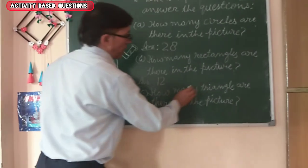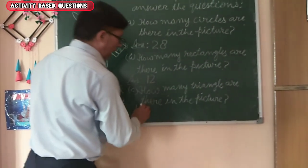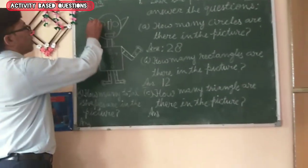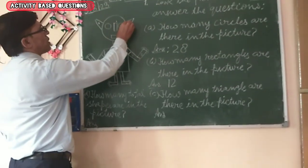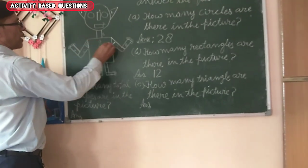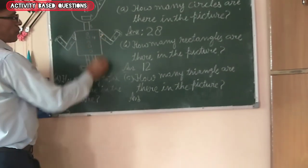How many triangles are there in the picture? 1, 2, 3, 4.